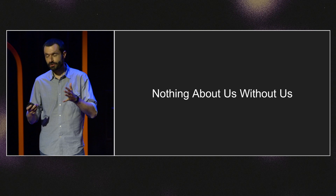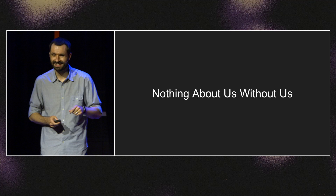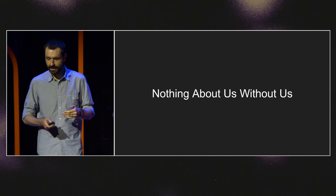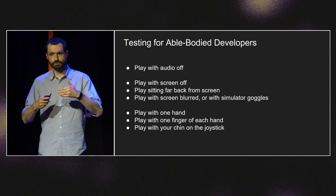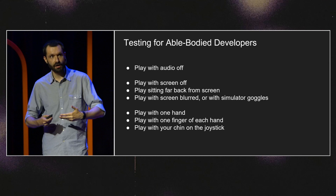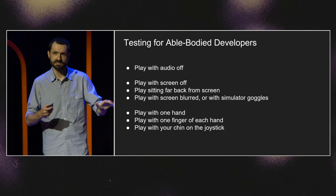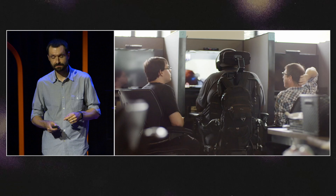This anecdote also shows two other important facets of accessible design. The first is 'nothing about us without us.' Most of the people working on The Last of Us are able-bodied, but we didn't let that stop us from trying to imagine what barriers players might encounter. We tried playing with the audio off, with the screen off or eyes closed, playing the game with one hand — to get some sense of what barriers might exist in our game.